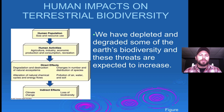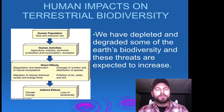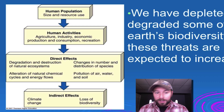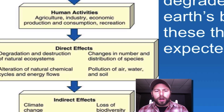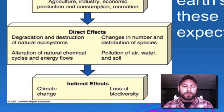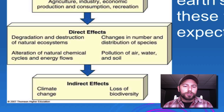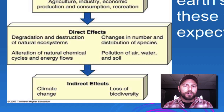We have seen a number of different human impacts on terrestrial biodiversity. One of the biggest ones is the human population. As human population increases, so does our resource use typically. Activities such as agriculture, industry, and other economic production have all had direct and indirect effects — some leading to loss of biodiversity, others such as pollution of air, water, and soil. So we need to be careful with managing resource use and how we have direct and indirect effects on our earth systems.